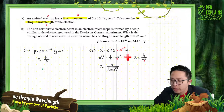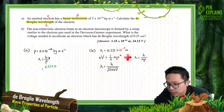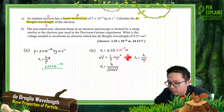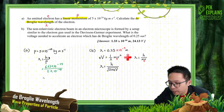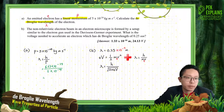H is the Planck constant. You can find H in the list of constant values, which is 6.63×10⁻³⁴. Divide by this momentum, 5×10⁻²⁴.